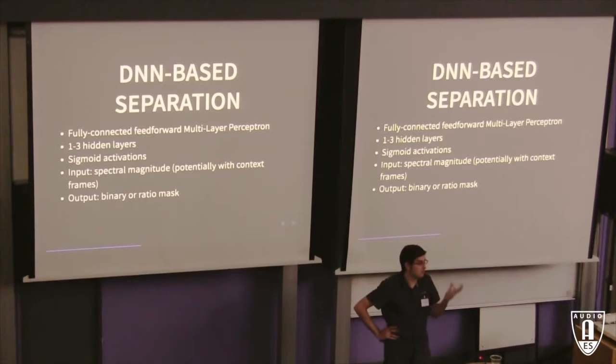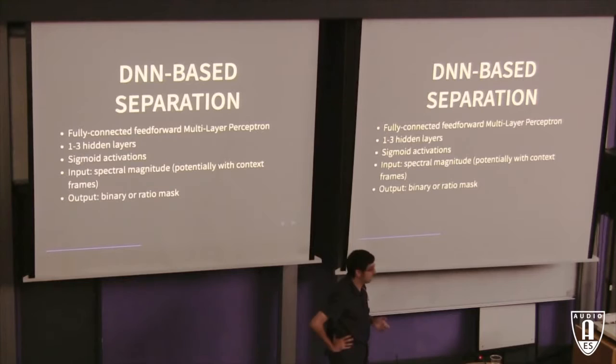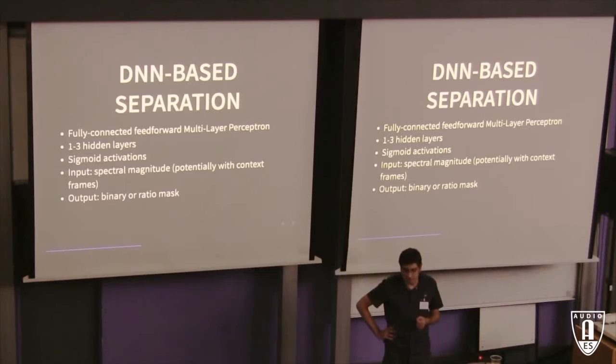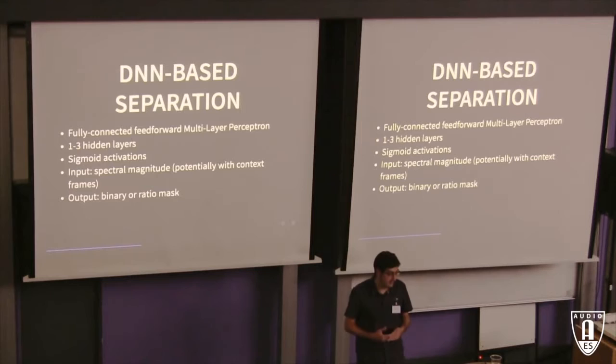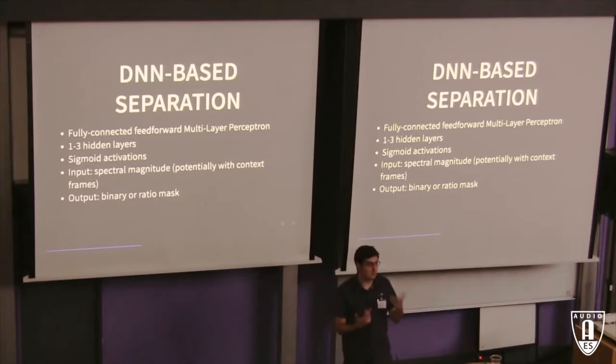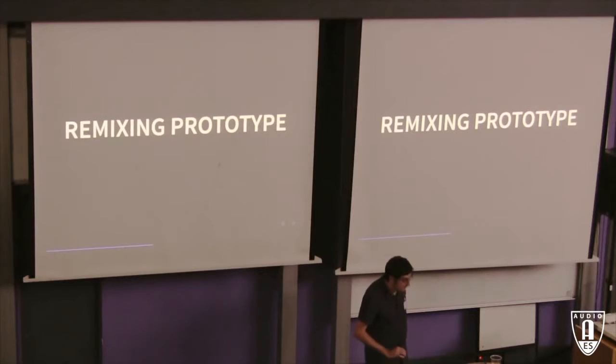The technique we're using is deep neural networks, which I think most people are either doing or thinking about. It's a fully connected neural network with one to three hidden layers and sigmoid activation functions. We give it a spectral frame, sometimes with context like the previous and next frame, and train it to predict a ratio or binary mask.